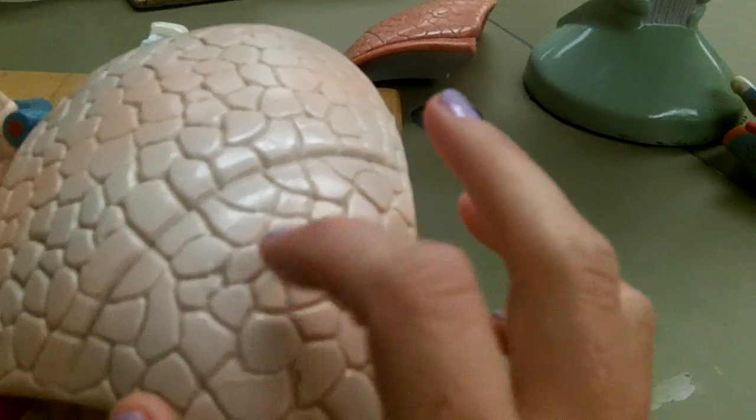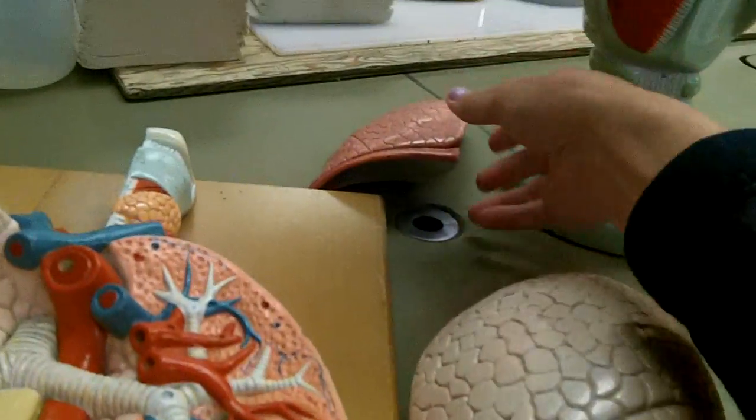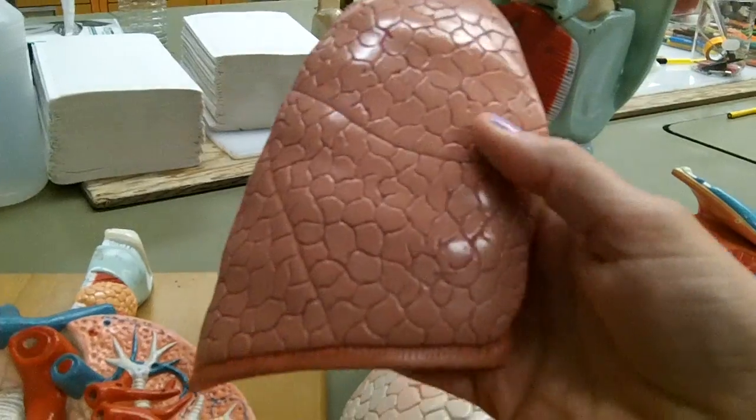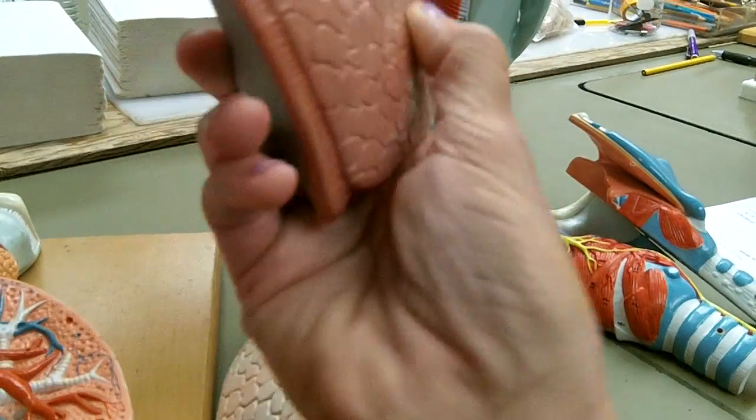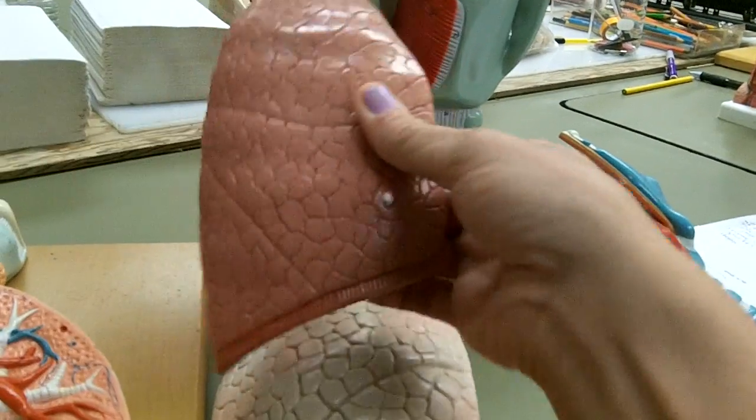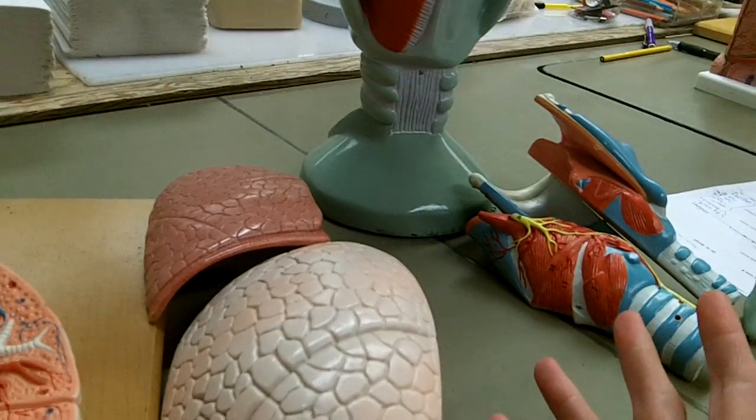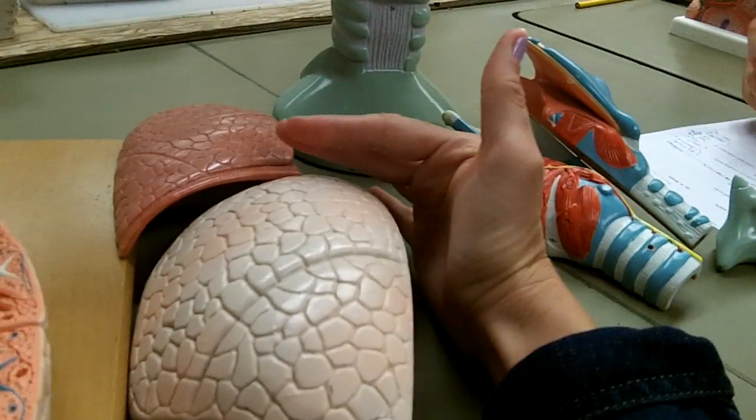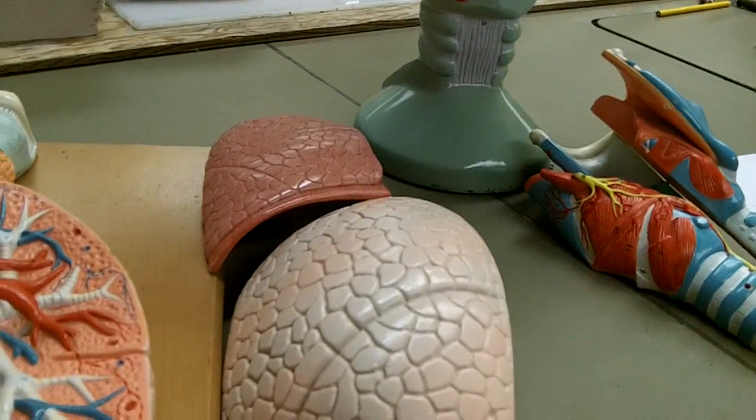So like I said, these structures that you can see with the naked eye are called lobules. And then if we look at this lung model, we see on the underside that the lungs are firmly attached to the diaphragm, which is good because the lungs are not muscular structures.